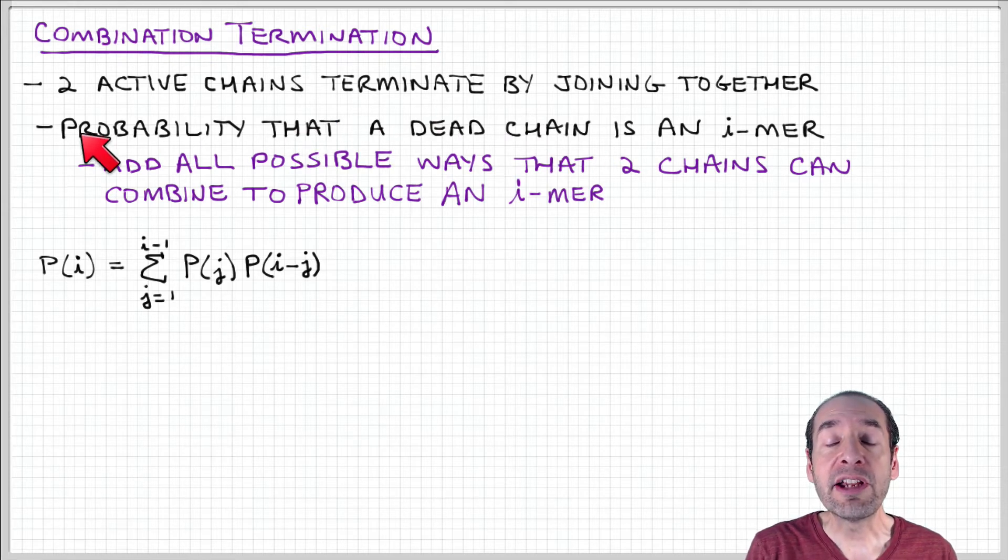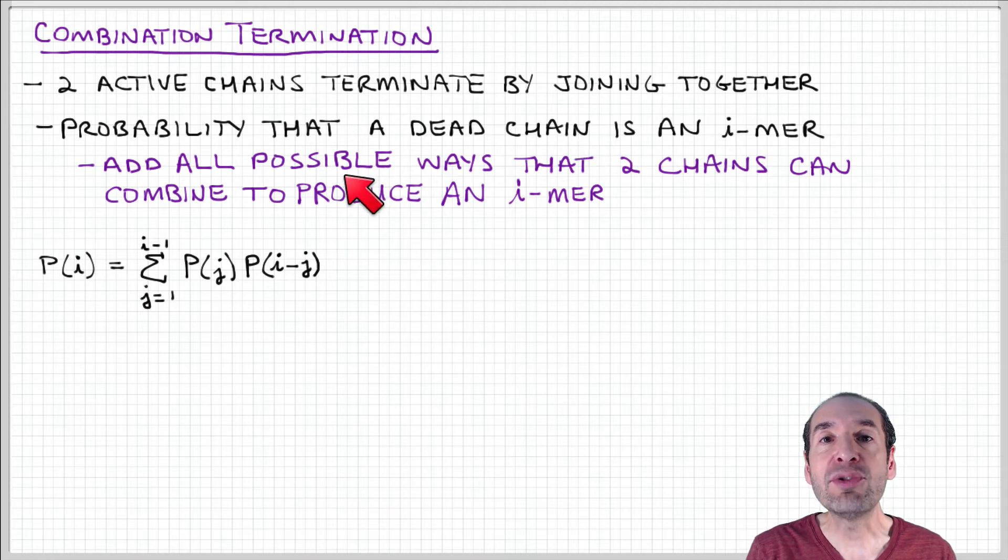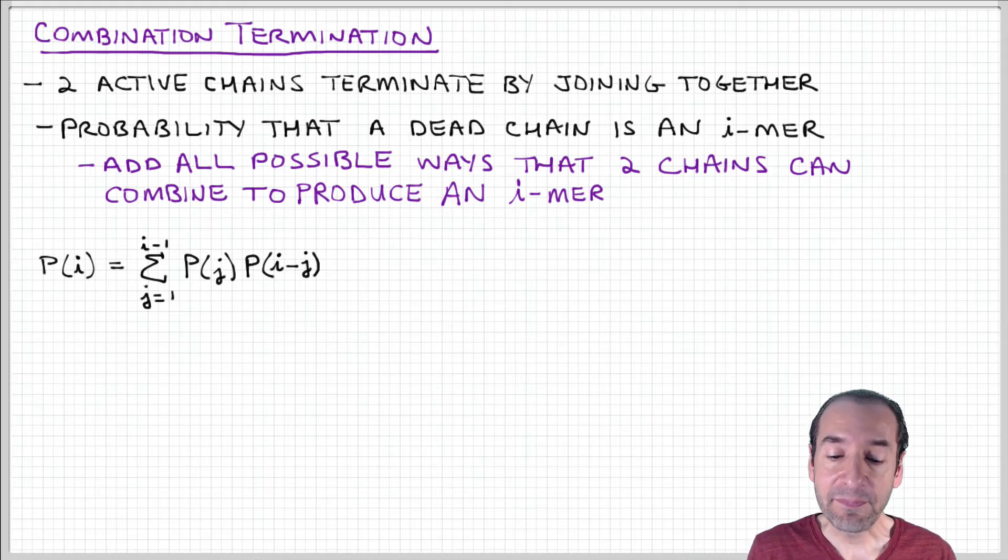So therefore, to express the probability that a dead chain is an i-mer, we need to add up all the possible ways that two active chains can combine to produce a chain with a length i. And that's what's expressed here in this relationship.